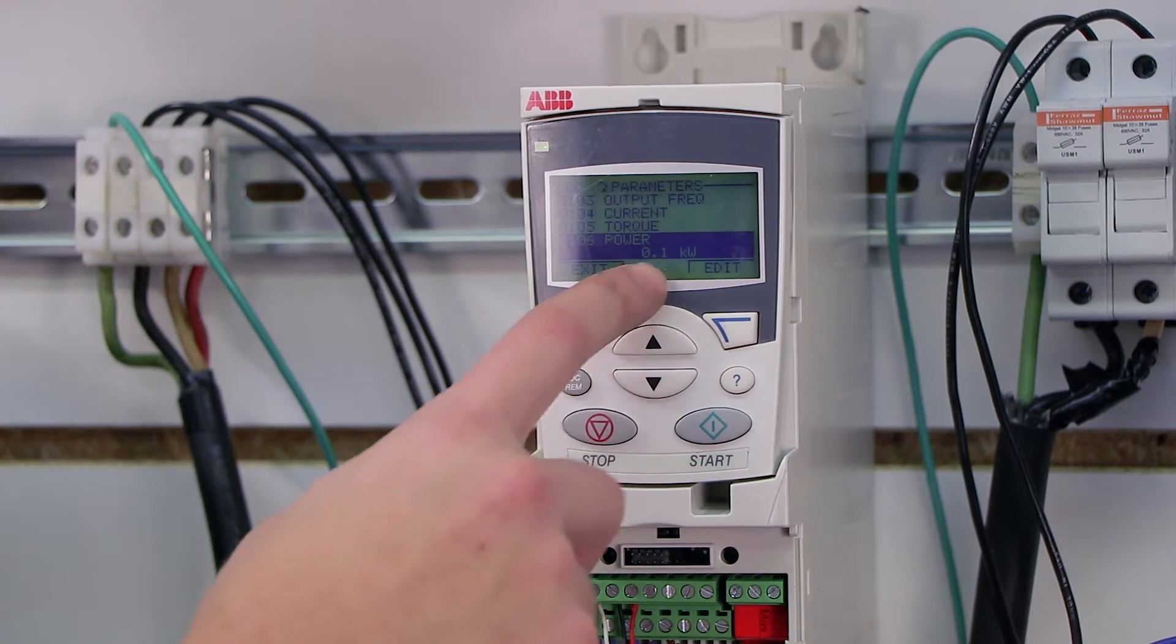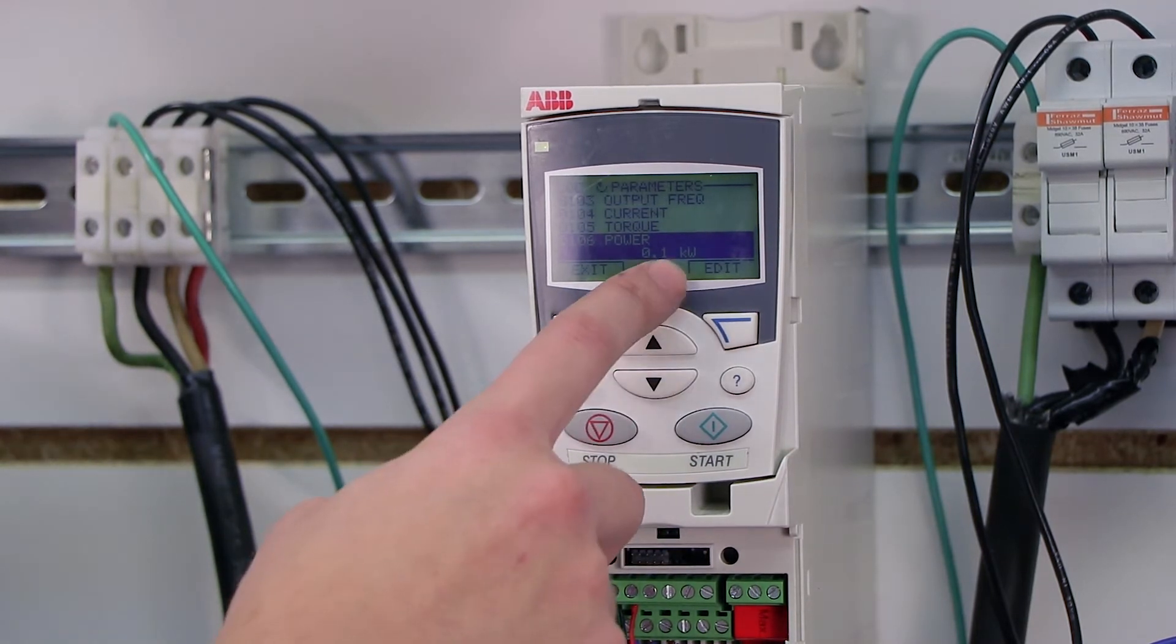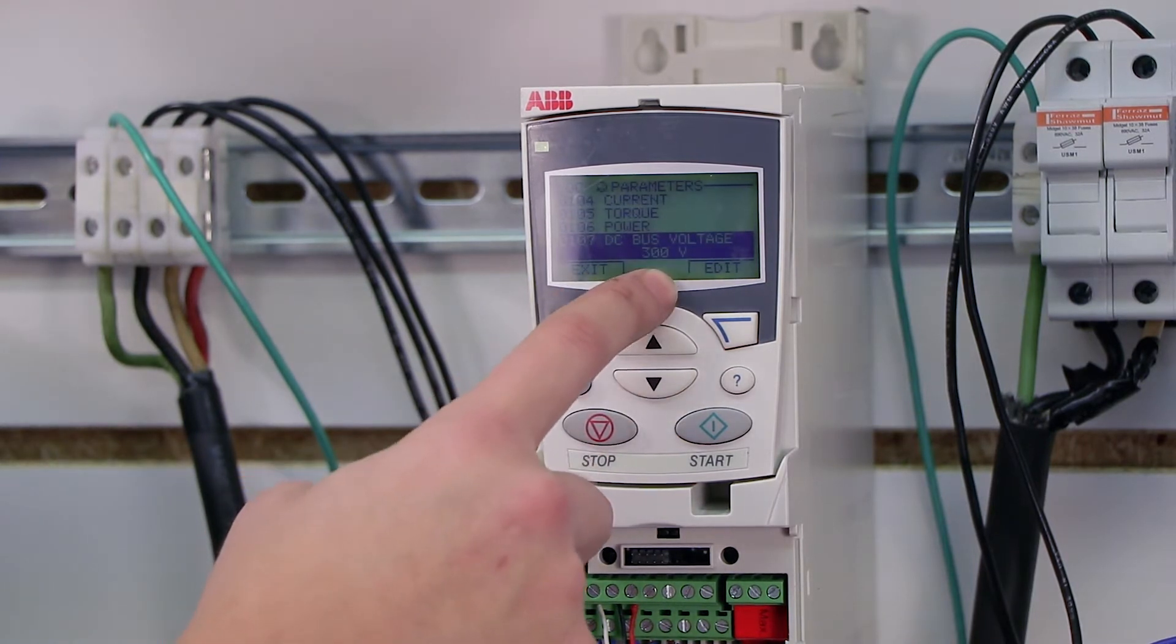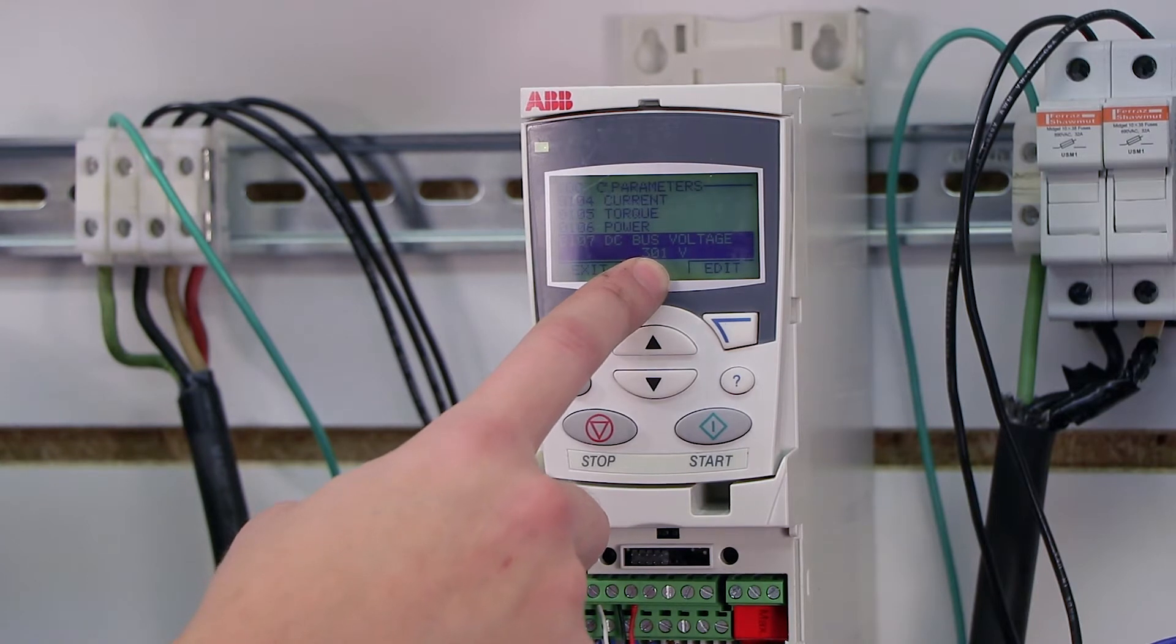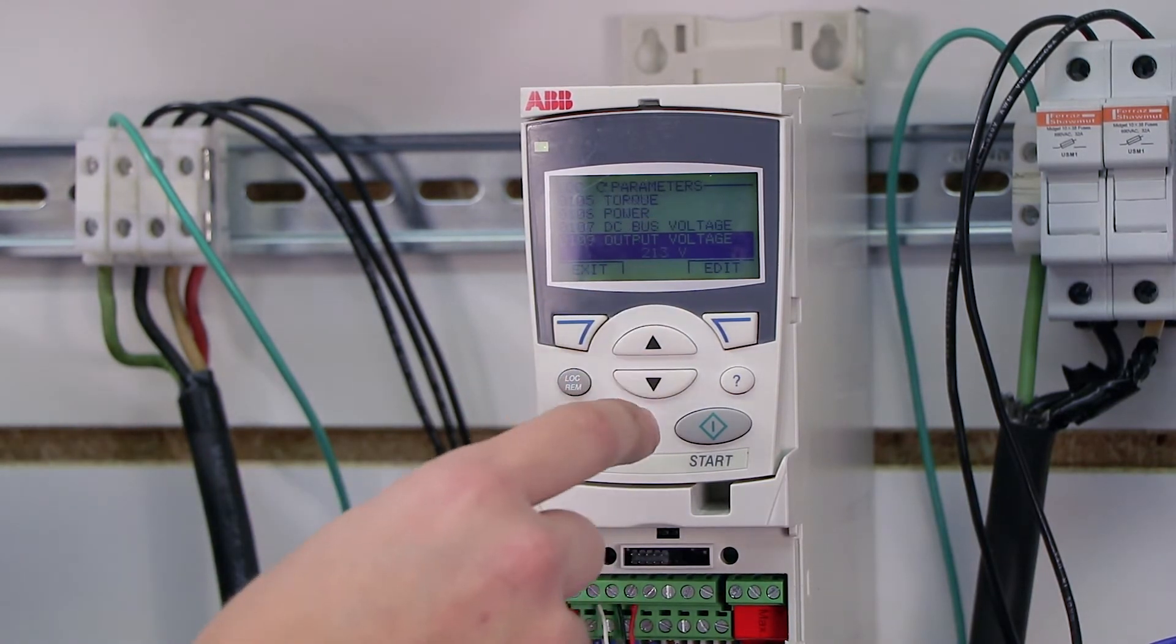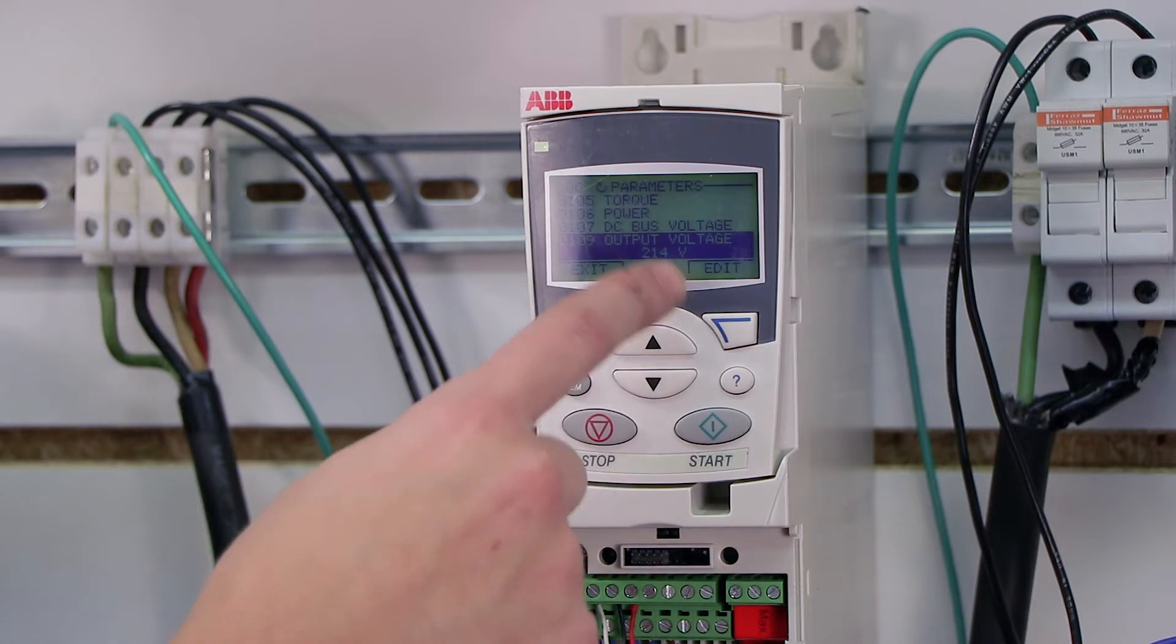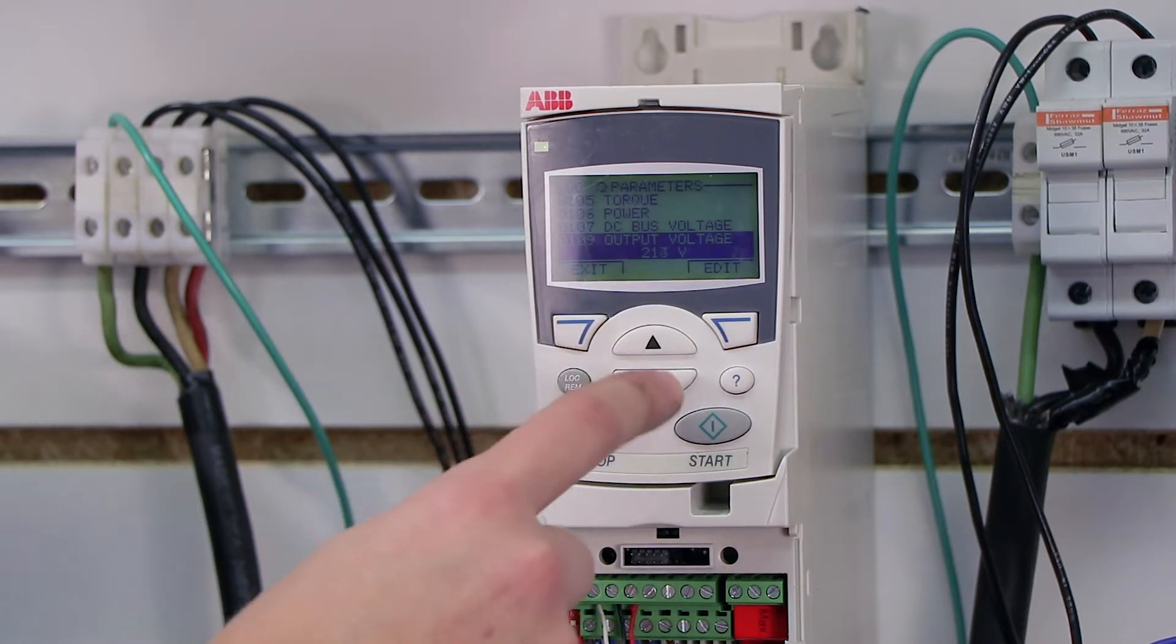My power, it's only consuming one kilowatt of power right now, instead of the full rating of the actual drive and motor itself. My bus voltage is at 300 volts, which is normal. That's actually going to be about 1.3 times my actual input voltage. My output voltage is 214 volts, most likely because I'm bringing in 214 volts, so the drive is generating a voltage similar to my input.